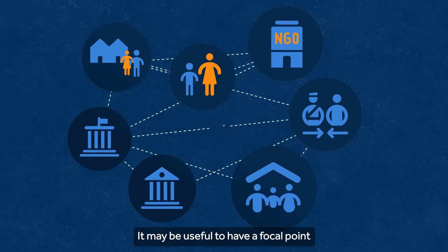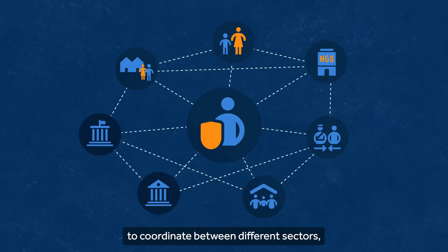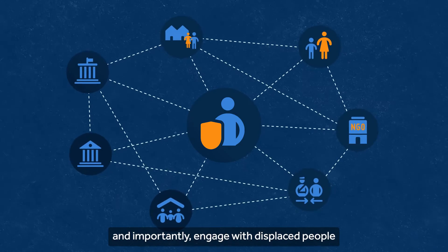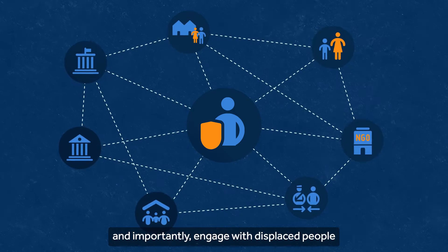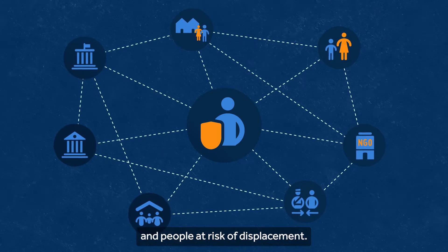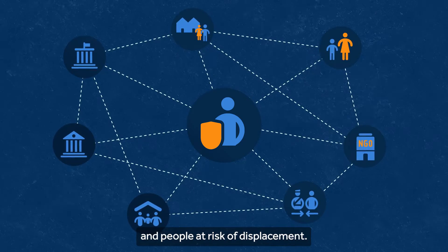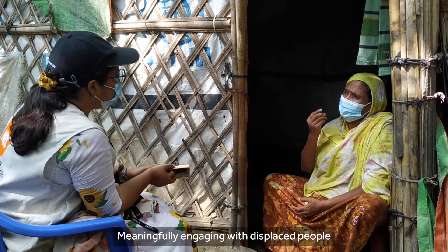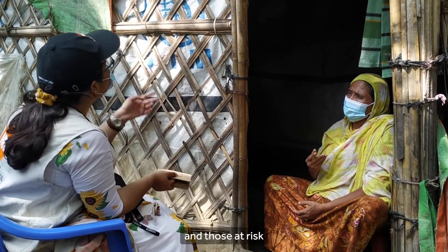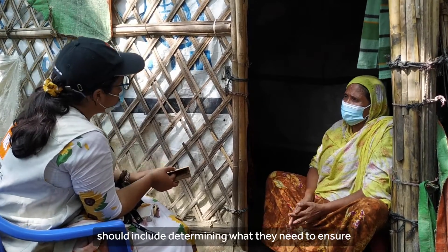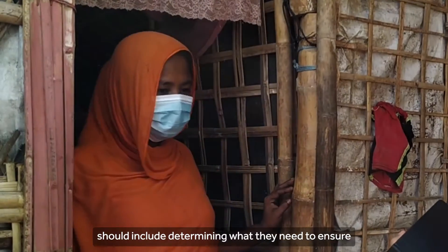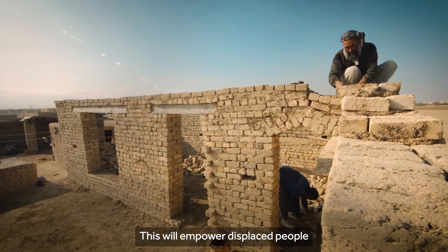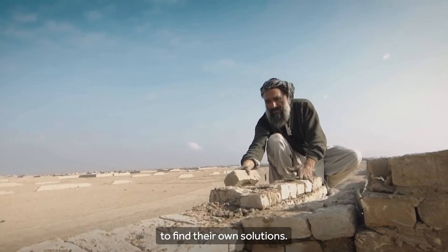It may be useful to have a focal point to coordinate between different sectors as well as different parts of society. And importantly, engage with displaced people and people at risk of displacement. Meaningfully engaging with displaced people and those at risk should include determining what they need to ensure resources are available. This will empower displaced people to find their own solutions.